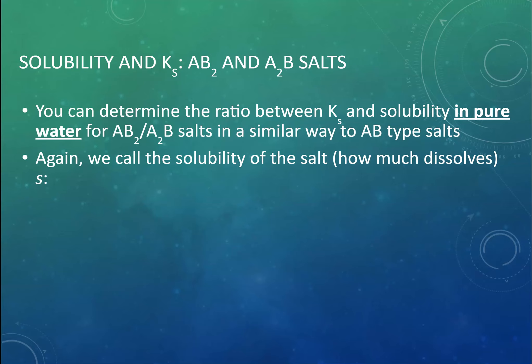So S amount of our salt dissolves and it's going to give either A²⁺ and 2B⁻ ions or 2A⁺ ions and a B²⁻. Now if we've got our equilibrium constant expressions quite clearly there, if S amount of AB₂ dissolves we're going to get an S amount of A²⁺ and 2S of the B⁻ which we can put into that equation.